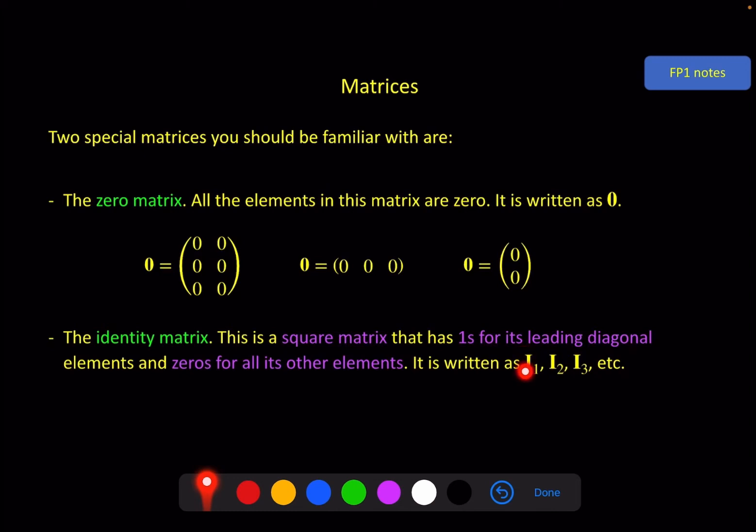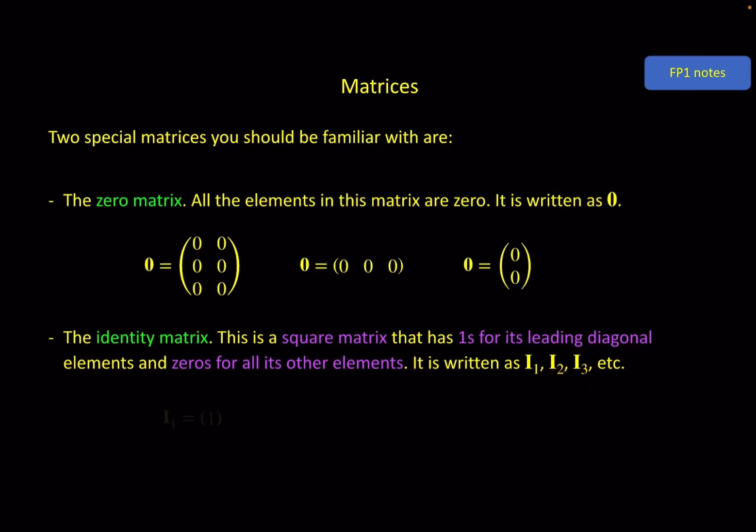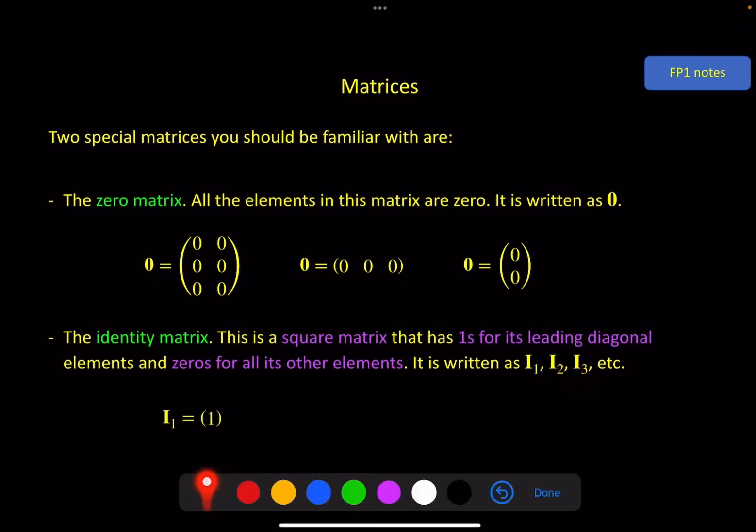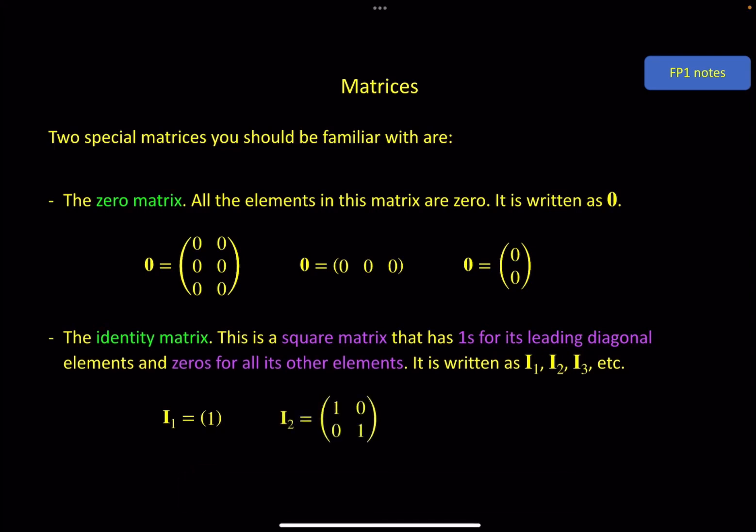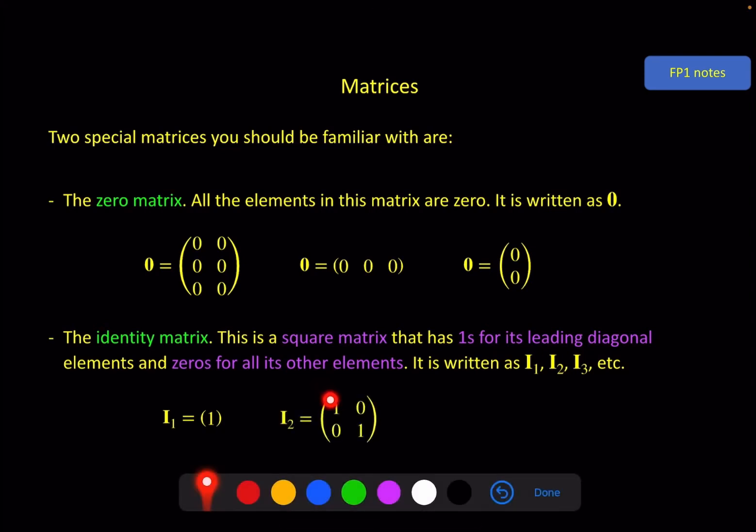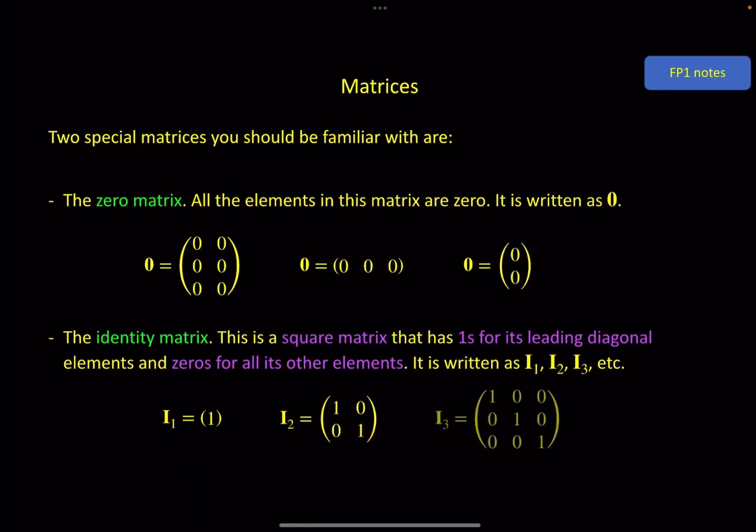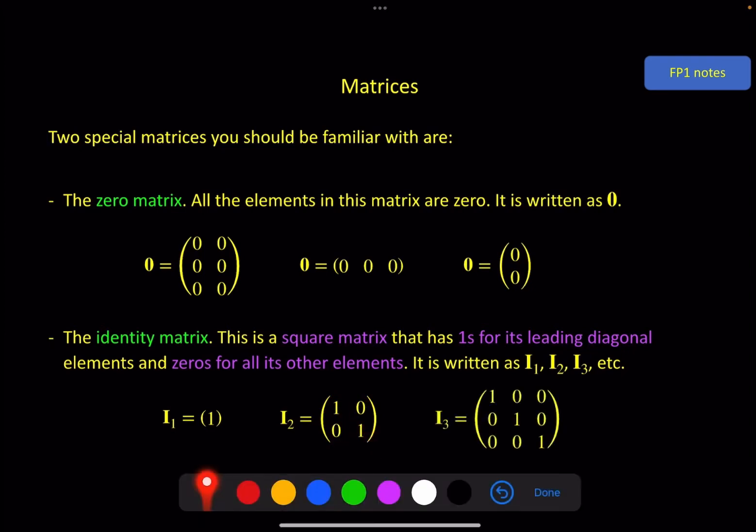The I stands for identity. And the 1 tells you it's a 1 by 1. Or a 2 for a 2 by 2, 3 by 3, and so on. So the 1 by 1 identity matrix is just a 1. The 2 by 2 identity matrix has 1s on the leading diagonal and zeros everywhere else. The 3 by 3 shows the pattern a little bit more easily. The 1s on the leading diagonal, zeros everywhere else, and so on.